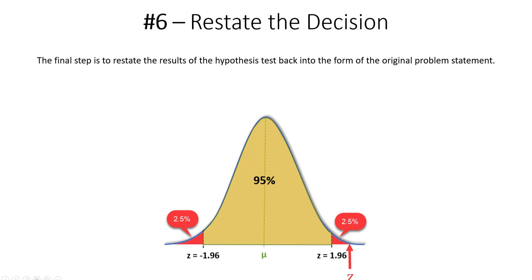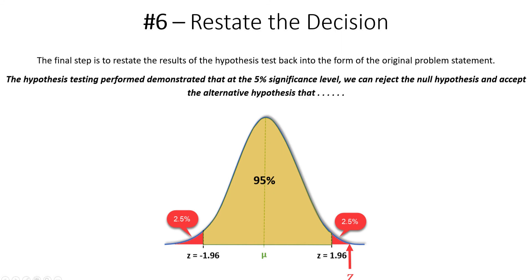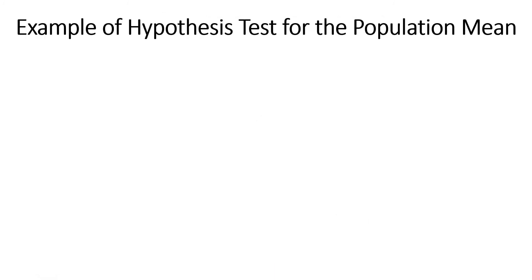Lastly, we simply restate that decision. For example: our hypothesis test performed at a 5% significance level — we can reject the null hypothesis and accept the alternative that our process shifted or changed. That's step six. Now let's get into the example.